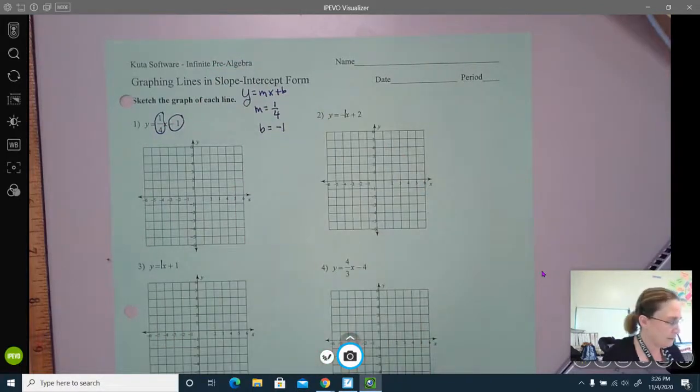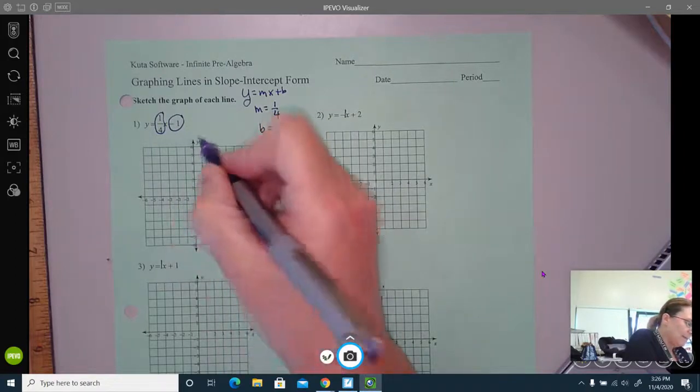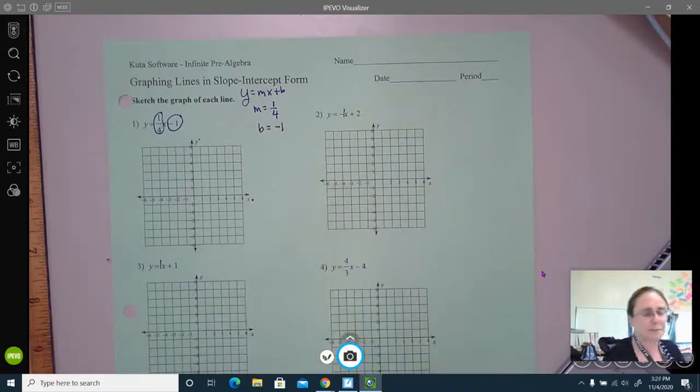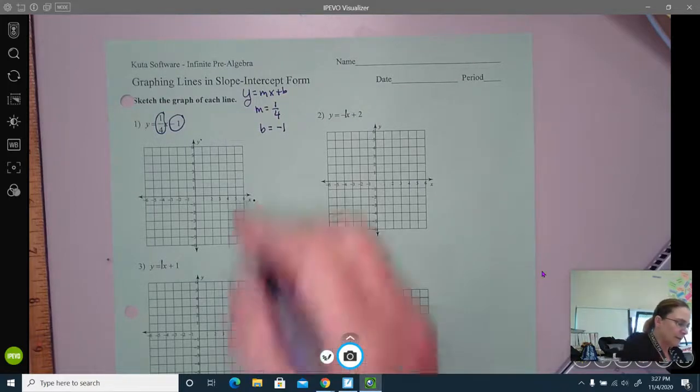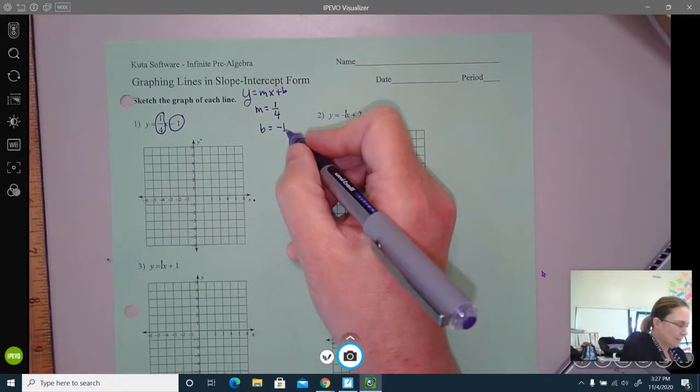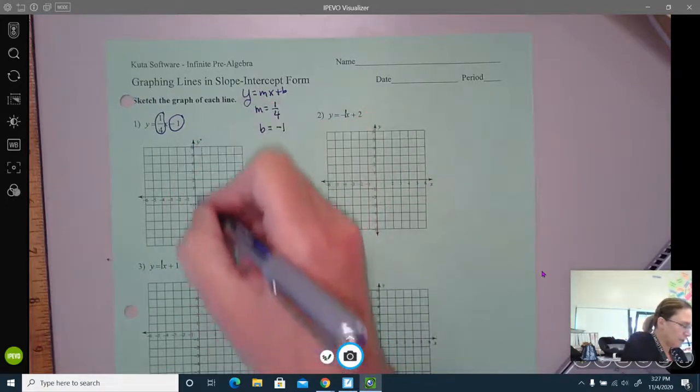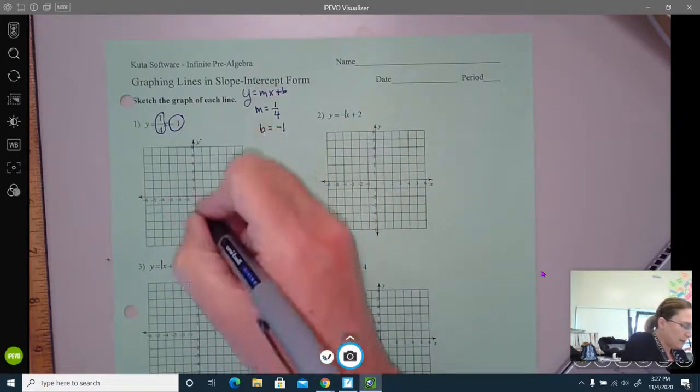I have a y-axis and I have an x-axis. My first point is related to the y-intercept. So my y-intercept is negative one. So I look on my y-axis, I find negative one, and I make a point.